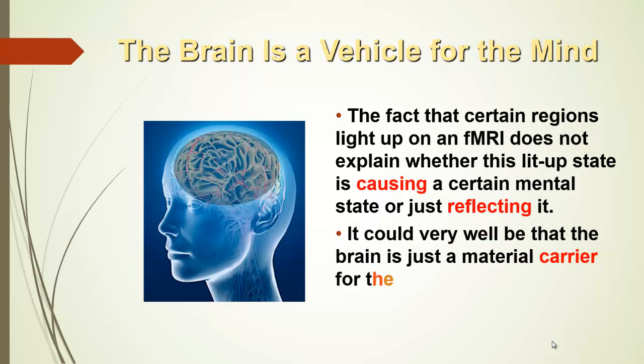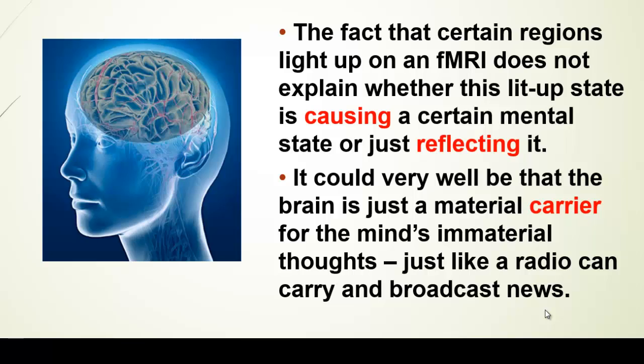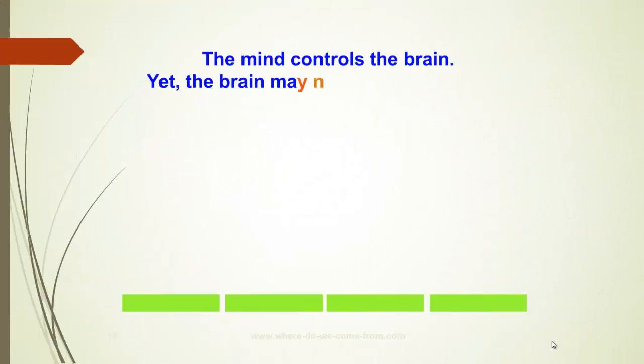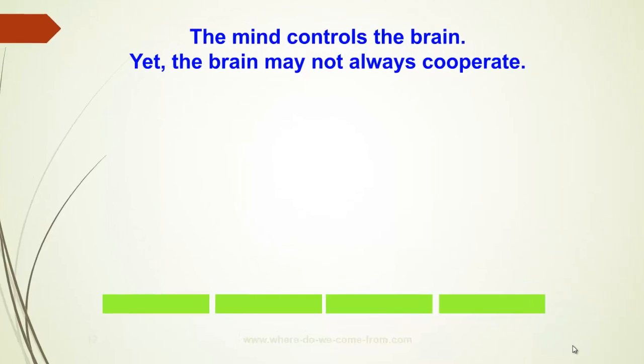It could very well be that the brain is just a material carrier for the mind's immaterial thoughts. I compare it with a radio that carries and broadcasts news. When the radio breaks down, does that mean that the news has been broken down? No, it's just a carrier of the news that broke down. If that's the case, then we have to realize that the mind is in control of the brain, like the news report is in control of the broadcasting radio or TV. But the brain may not always cooperate because there can be defects in the brain.